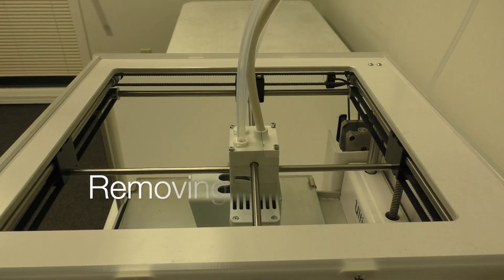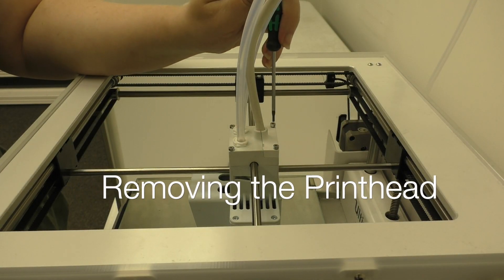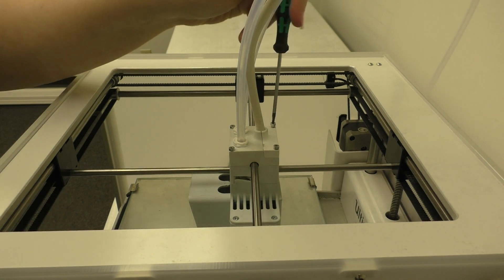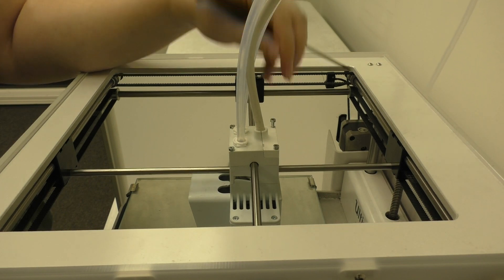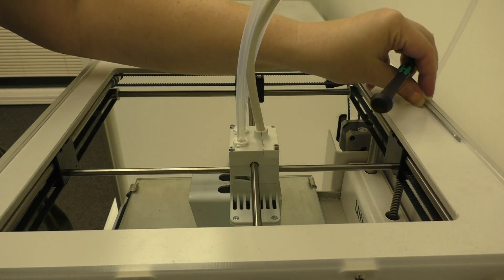We're going to start with removing the print head from the machine. If you've already done this, go ahead and skip ahead to about 2 minutes and 30 seconds. To start, you're going to need to unscrew the two screws at the rear of the print head. Go ahead and set these aside.